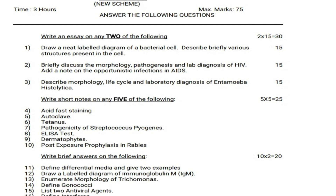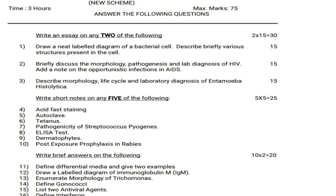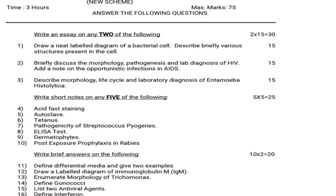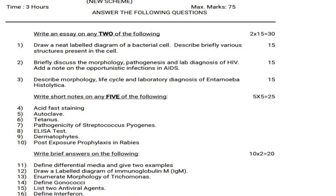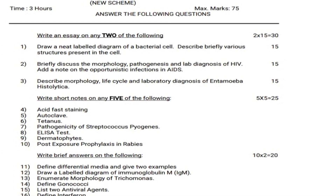Next, moving on to short notes. They will give 7 short notes; out of those 7, you have to answer only 5. Each question carries 5 marks, so 5 into 5 equals 25 marks. Fourth question: Acid fast staining.